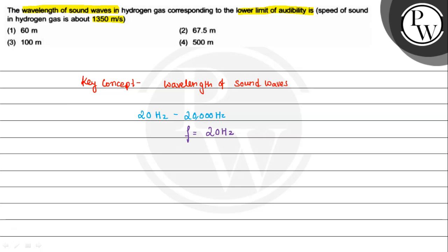Frequency is 20 hertz, and the velocity of sound in hydrogen gas is v equals 1350 meters per second. We know v equals f times lambda, and basically the question asks for the lambda value.